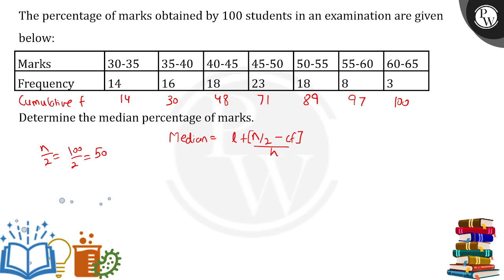The lower limit of the median class (45 to 50) is l = 45. The class size is h = 5. The cumulative frequency of the class preceding the median class (40 to 45) is cf = 48. The frequency of the median class is f = 23. Now we have all the values.